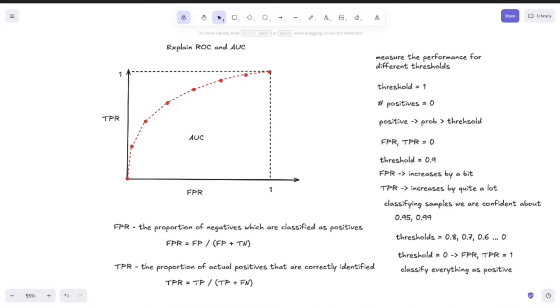And this number, area under the curve, is a number between 0 and 1, which can indicate the performance of our model. And the higher it is, the better our model is.